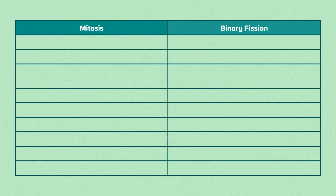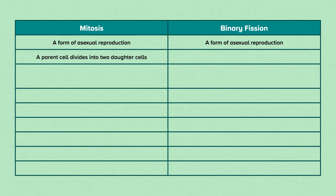Let's compare mitosis with binary fission. Mitosis is a form of asexual reproduction, and so is binary fission. In mitosis, the same as with binary fission, the parent cell divides into two daughter cells.